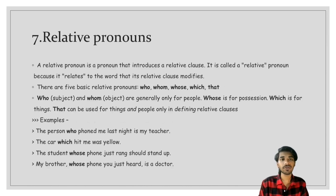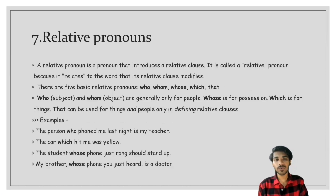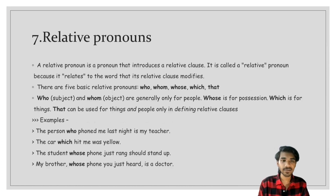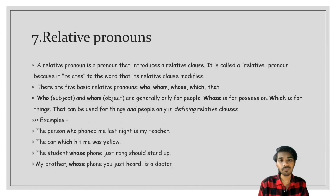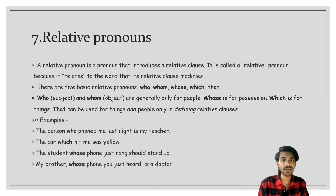The seventh type is relative pronoun. A relative pronoun introduces a relative clause. It is called a relative pronoun because it relates to the word that the relative clause modifies. There are five basic relative pronouns: who, whom, whose, which, and that. 'Who' (subject) and 'whom' (object) are generally only for people. 'Whose' is for possession. 'Which' is for things. 'That' can be used for things and people only in defining relative clauses. Examples: 'The person who phoned me last night is my teacher.' 'The car which hit me was yellow.' 'The student whose phone just rang should stand up.'